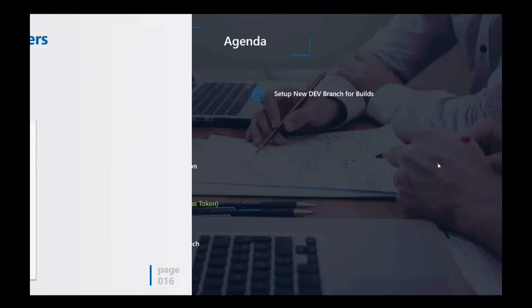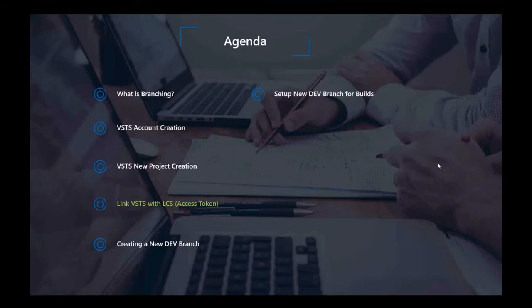When you have created your project and you're ready to go, the next thing is to link your VSTS account with LCS. LCS is a platform where you can deploy your cloud environments, and Microsoft can help you provision UAT and production environments for your implementation. In LCS, we can store assets — code, deployable packages, data packages — and drive our business process modeler, task recorders, and help systems through LCS.